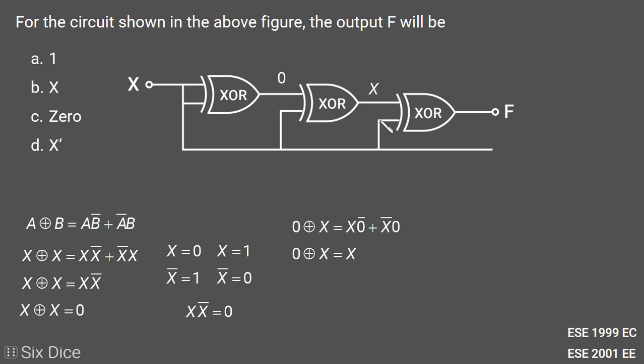Now we are doing X XOR with X. We see X⊕X will be 0, so F equals 0. The output of this circuit will be 0, and option C is the right answer for this question.